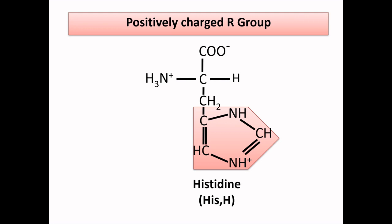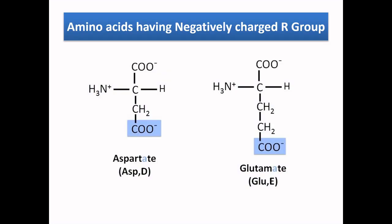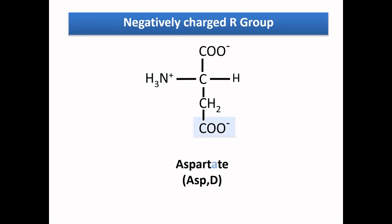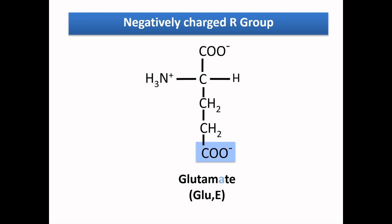Now let's move to our last group — amino acids with negatively charged R group. It has two amino acids: aspartate and glutamate, also called aspartic acid and glutamic acid. Aspartate has a carboxylic group (COO⁻) attached to the side chain methyl group, whereas glutamate is similar to aspartate but it has two methyl groups instead of one. Because of the carboxylic group, these amino acids are negatively charged, and both of their single-letter names are different from their name's first letter.